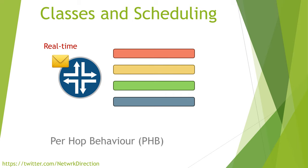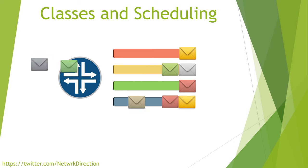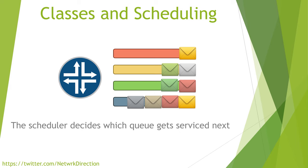Each interface will have several queues. These are usually implemented in hardware but there could be software queues as well. When packets are ready to be sent out, they are added to one of these queues based on their classification. When the interface is available, the packet is moved from the queue and is sent out the interface. There will be many packets coming into a router, but a single interface can only put one packet on the wire at a time. So when there are multiple packets spread among different queues, how does the router decide which packet to send next? This is handled by a component called the scheduler.